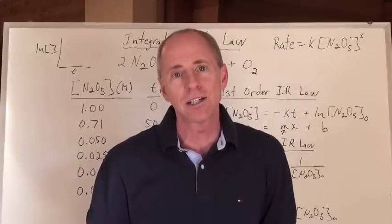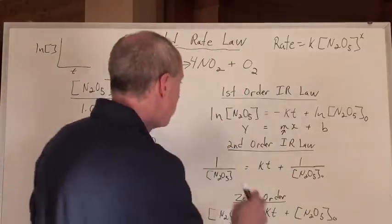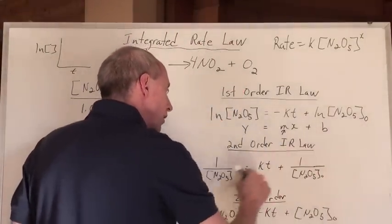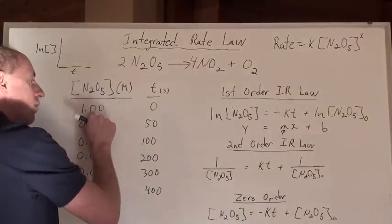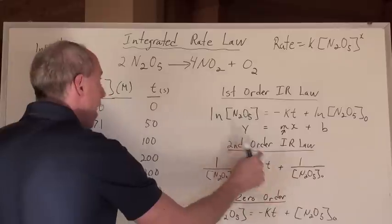But what if the line is curved? Then it's not a first order reaction. Then you've got to go to second order. And your second order integrated rate law equation is 1 over the concentration.